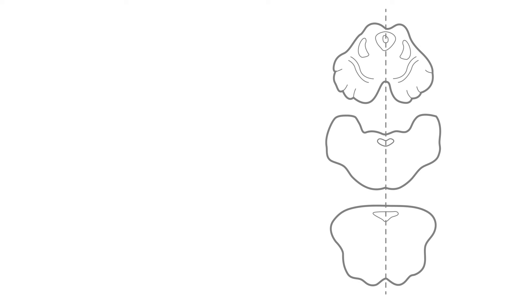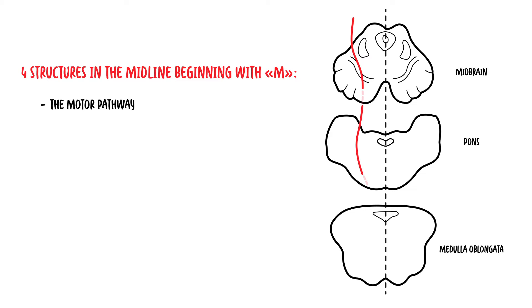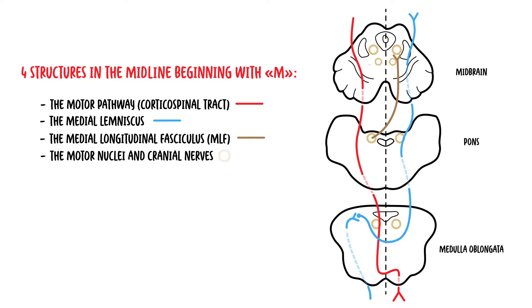The Rules of Four, as the name suggests, consist of four rules, and within each rule everything relates to four. The first rule is that there are four structures in the midline of the brainstem beginning with M: the motor pathways (corticospinal tract), the medial lemniscus, the medial longitudinal fasciculus, and the motor nuclei of the cranial nerves, which are also located in the midline.